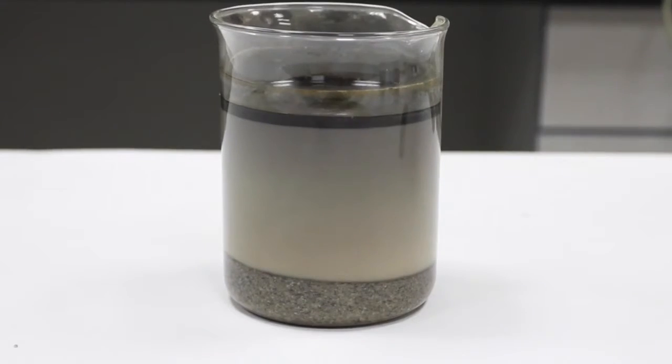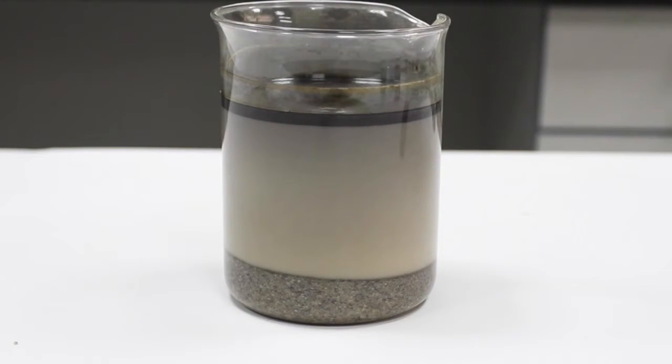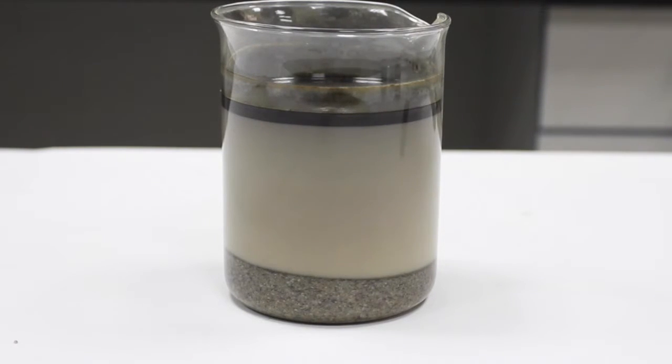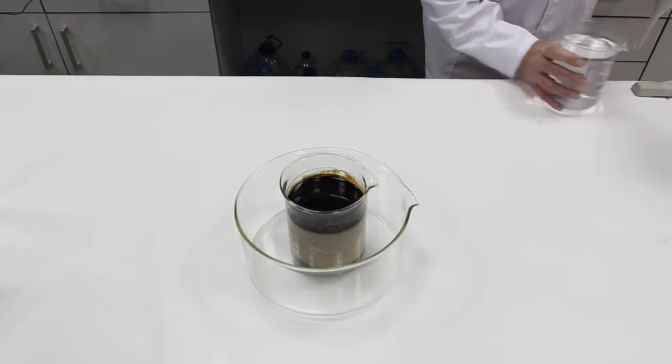The stirrer is removed and left to stand for 5 minutes. If left resting longer, you could see how the emulsion changes color, leaving the lower part lighter and the upper part darker. This occurs because the crude oil rises to the surface.